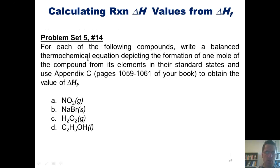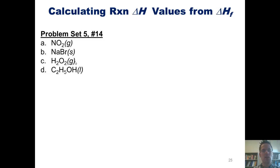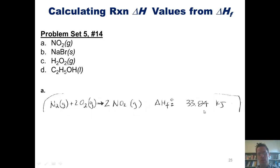For each of the following compounds, write a balanced thermochemical equation depicting the formation of one mole of the compound from its elements in their standard states and use Appendix C to obtain the values of ΔH formation. Let's start with compound number A, NO2, or nitrogen dioxide. If we look this up in Appendix C of our text, you'll note that forming NO2 gas, the enthalpy of formation given is 33.84 kJ for this balanced chemical equation. That is actually the final answer.